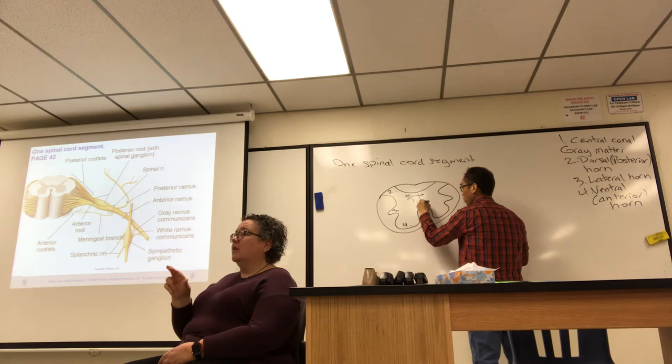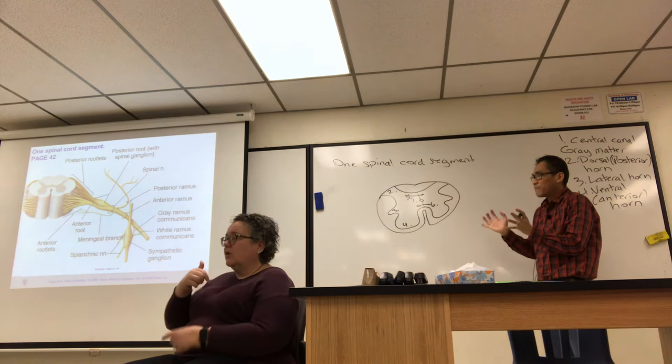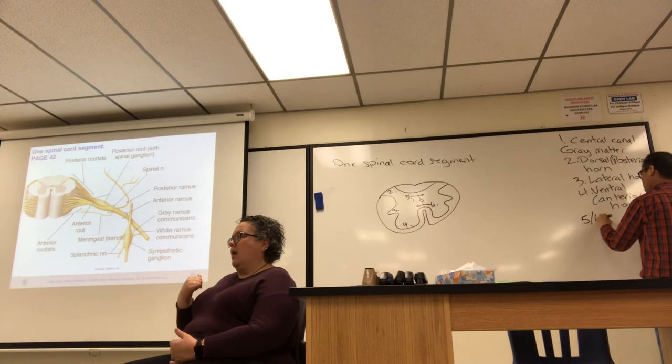There is a posterior gray commissure and an anterior gray commissure on either side of the central canal.